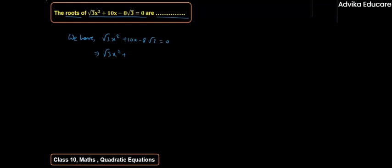So we can write this as √3x² + 12x - 2x - 8√3 = 0. If you observe carefully, √3x² times -8√3 equals -24x², and 12x times -2x also equals -24x². This means that our middle term split is correct.